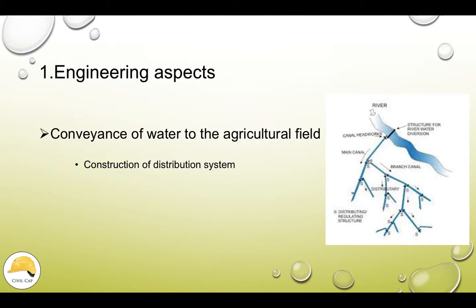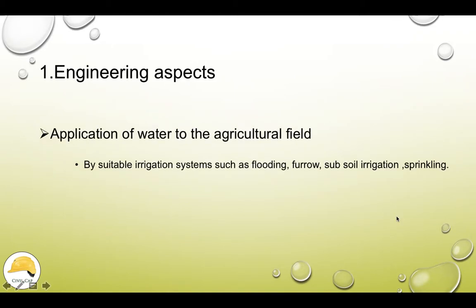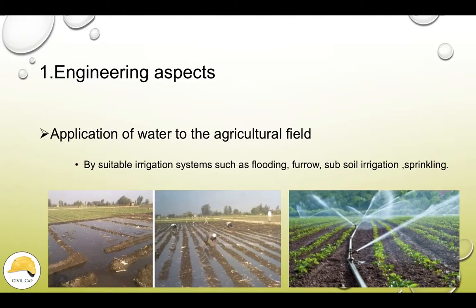The well is regulated, so we can also use a structure. We can use a full amount of well as the distributor. That is a regulatory structure — construct and use regulatory structures. This is also cross drainage works. The next point is application of water to the agricultural field. Now we are conveying the land and we can use crops in the land. This is called flooding. We use irrigation systems like furrow, sprinkling, etc. — there are many methods.